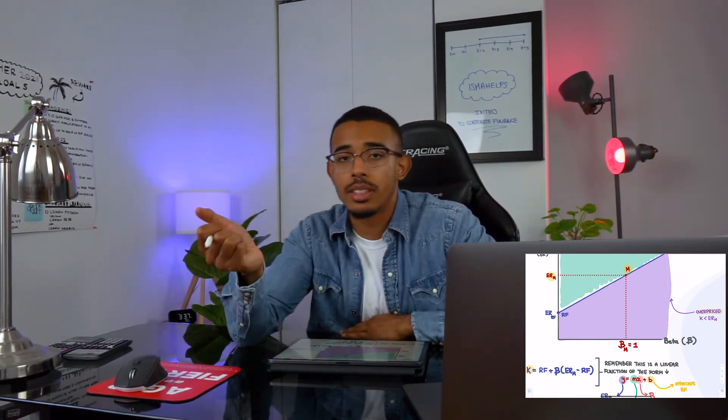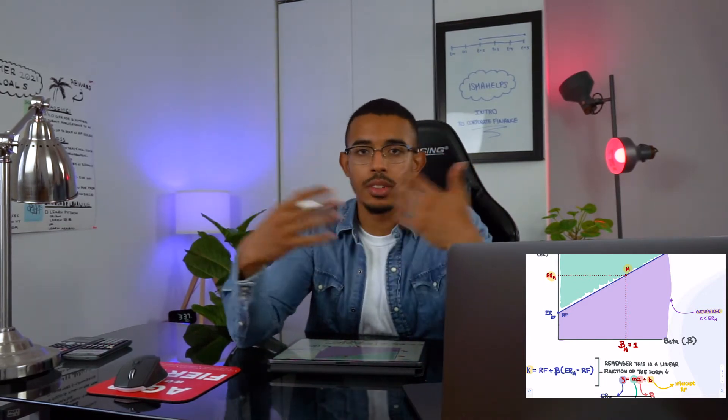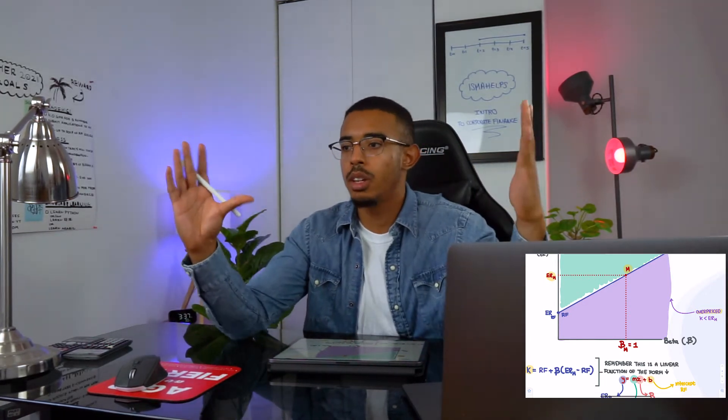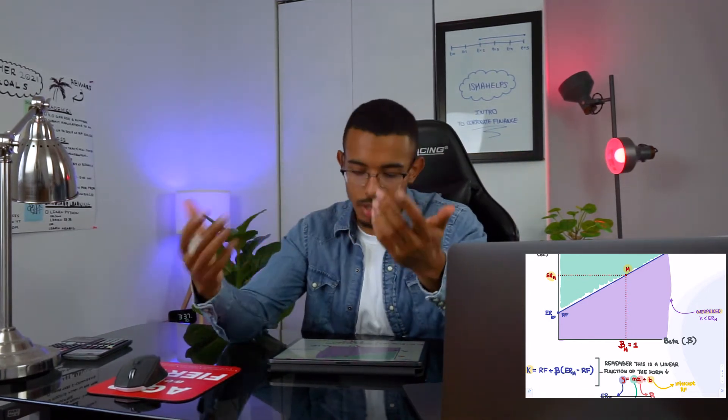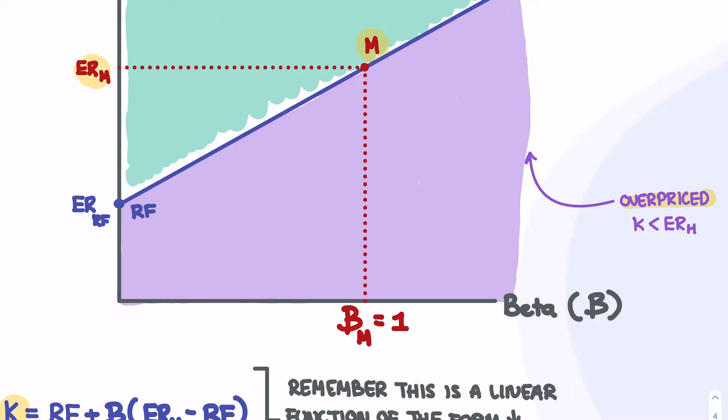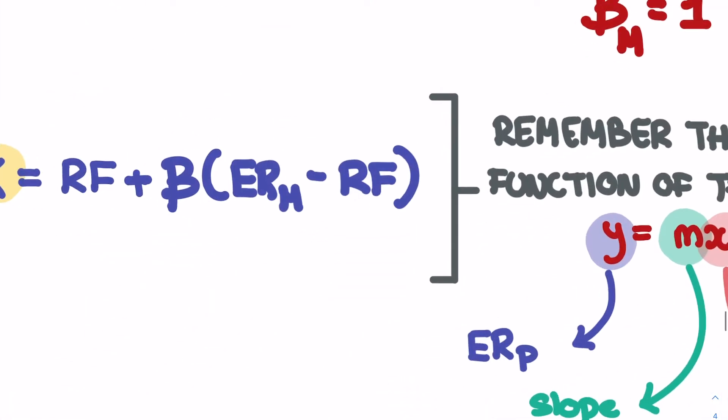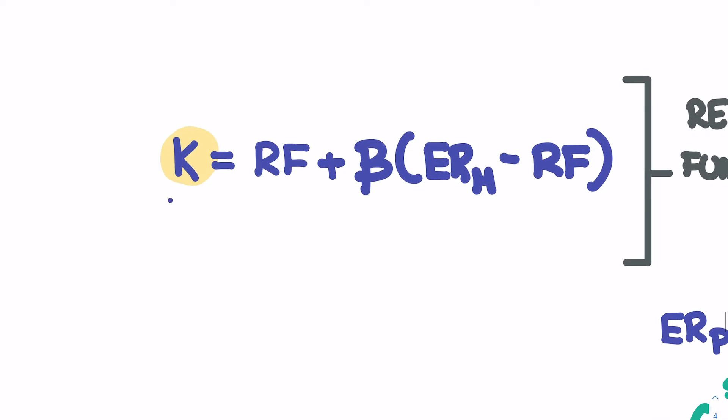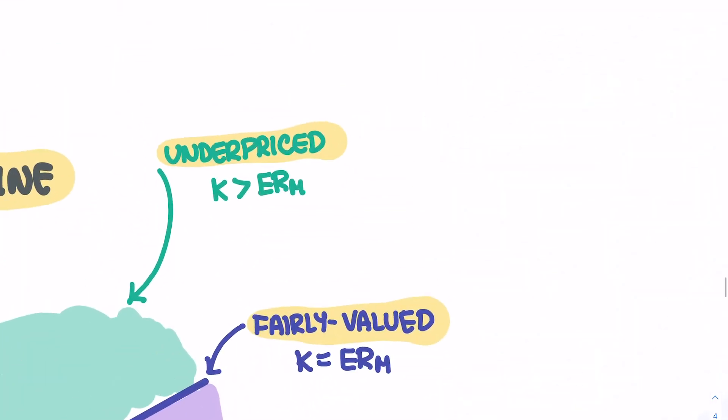Stocks should be fairly valued at all times. If a stock is either undervalued or overvalued, the market, because we're all given the same information, will actually correct itself. People will figure that out and correct themselves because we all have the same information. Once we use our function, we will be given a K in return, and we want to compare our K to the expected return of the market.